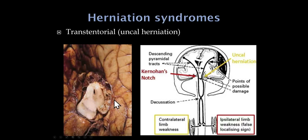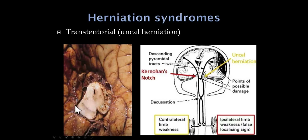Occasionally the entire midbrain contents shift over and push on the opposite cerebellar tentorium — compressing the opposite cerebral peduncle. In that case, the patient has hemiplegia contralateral to that peduncle but ipsilateral to the original lesion. This is Kernohan's notch — a false localizing sign. For example, a patient with left uncal herniation via Kernohan's notch will have an ipsilateral third nerve palsy and ipsilateral hemiplegia. In either case, a third nerve palsy in a comatose patient is uncal herniation until proven otherwise.